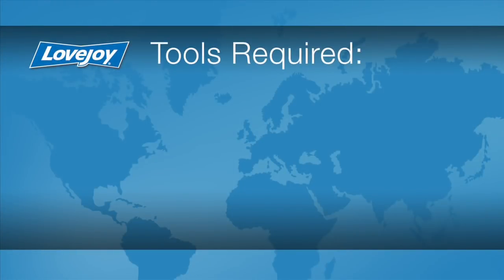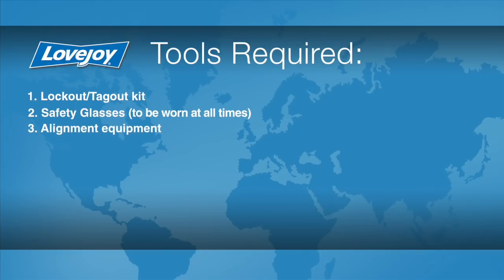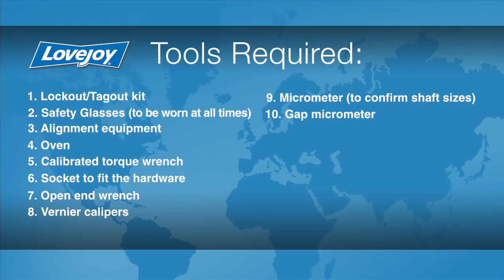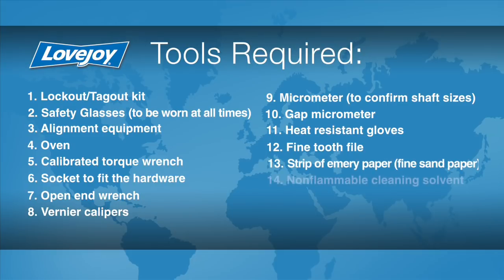Let's look at the necessary tools we will need to perform this installation. A lockout tagout kit, safety glasses, alignment equipment, an oven, calibrated torque wrench, a socket to fit the disc pack lock nuts, an open end wrench, vernier calipers, a micrometer to confirm the shaft sizes, heat resistant gloves, a fine tooth file, a strip of emery paper, non-flammable cleaning solvent, a clean cloth, and rubberized gloves.